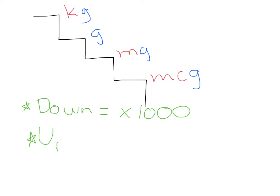The opposite would be if I go up a step, up equals divide by 1000. So just remember that every time we go down a step it's times 1000, every time we go up a step it is divided by 1000.